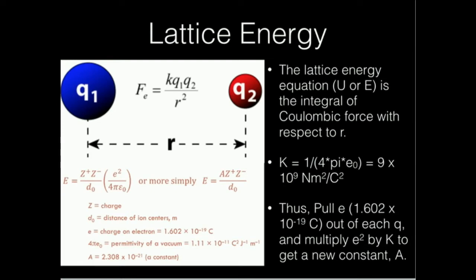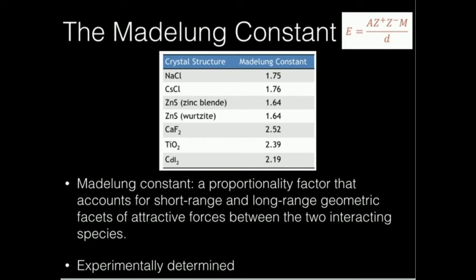That's going to lead us to talking about real lattice behavior, and we're going to talk first about the Madelung constant. Hopefully what you see up here at the top right is at least part of the expression for the lattice energy: E is equal to A times Z-plus times Z-minus divided by D, the interionic radius. They've thrown in this constant M, and that's what's referred to as the Madelung constant.